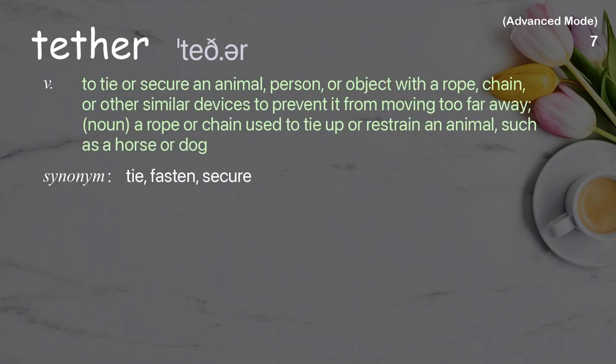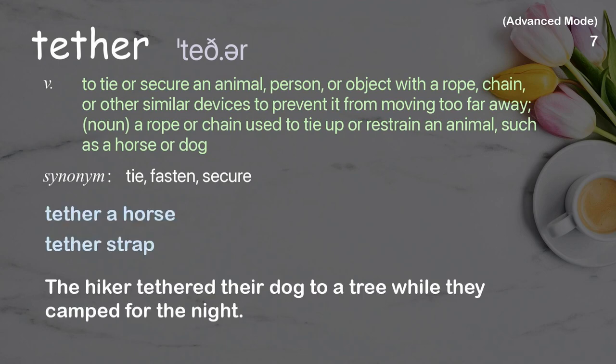Tether: to tie or secure an animal, person, or object with a rope, chain, or other similar device to prevent it from moving too far away. As a noun, a rope or chain used to tie up or restrain an animal such as a horse or dog. Examples: tether a horse, tether strap. The hiker tethered their dog to a tree while they camped for the night.